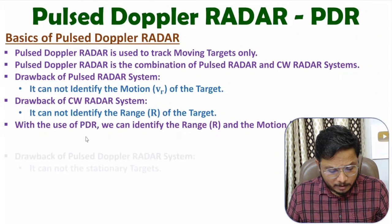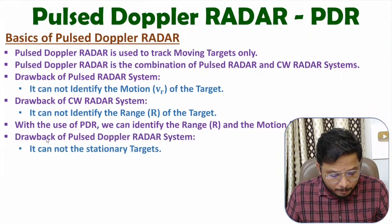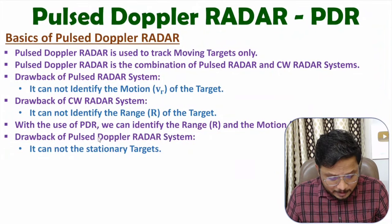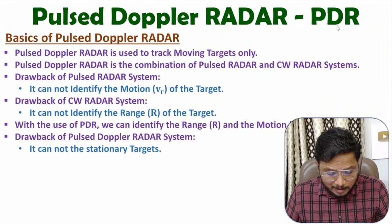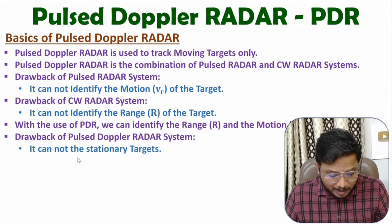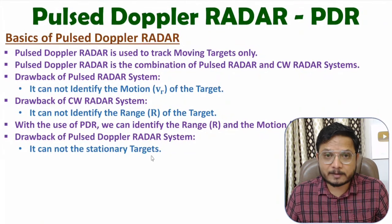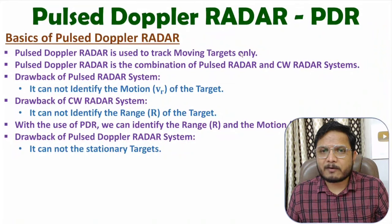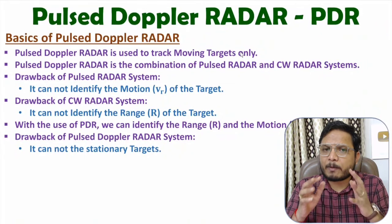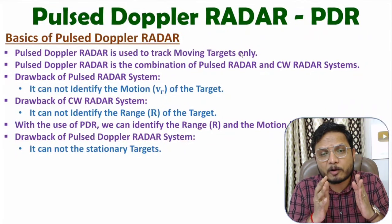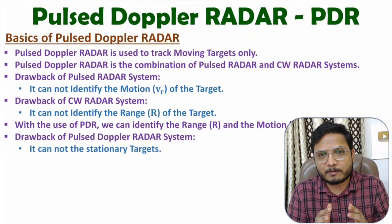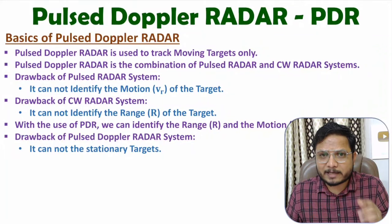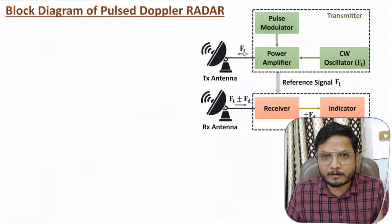One should know the drawback of Pulsed Doppler Radar system. This PDR cannot identify stationary targets — it is used for moving targets only. Now let me explain how the block diagram is structured.